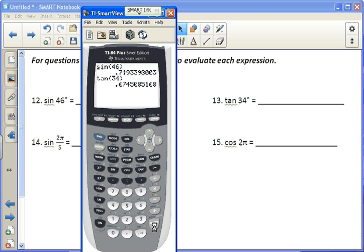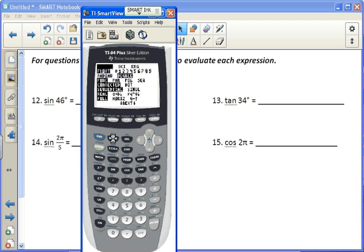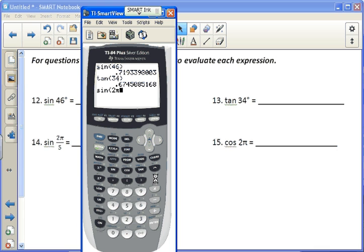And then for 14 and 15 we need to be in radian mode. So go to your mode, change it to radian. Then we do sine of 2 pi over 5, .951, and the cosine of 2 pi, which I think is going to be exactly 1. So when it's degrees, make sure you're in degree mode. When it's radians, which typically means pi, not always, but typically, then you want to be in radian mode.